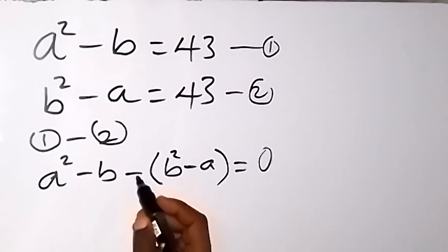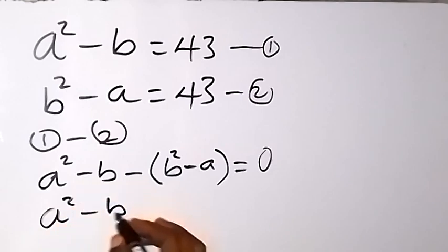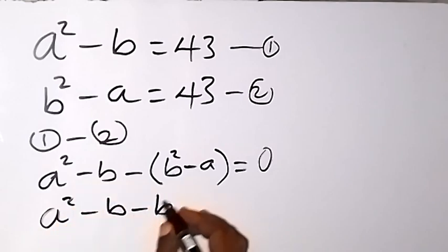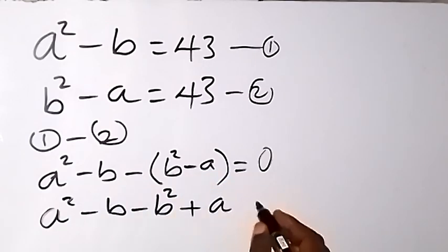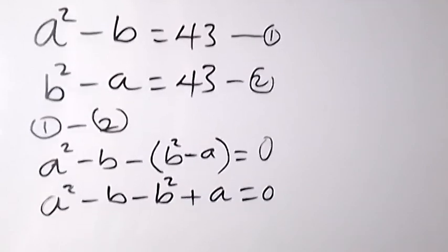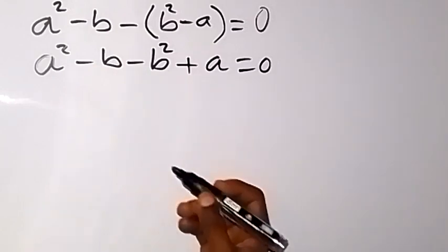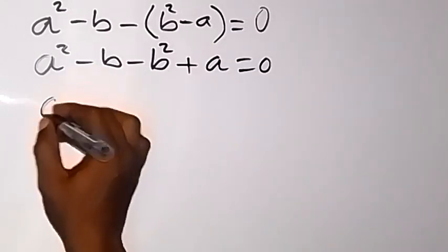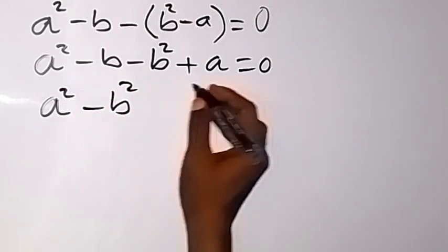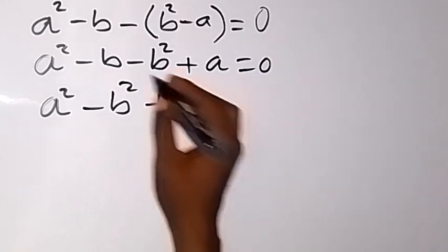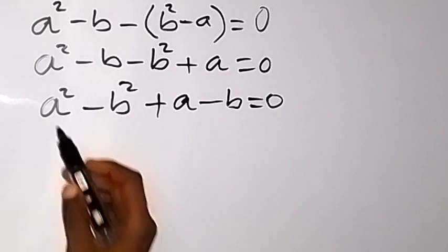When we use this minus to open the bracket, it becomes a squared minus b, minus b squared, then plus a, equals 0. From here, we bring the squared terms together: a squared minus b squared, then plus a, then minus b, which equals 0.